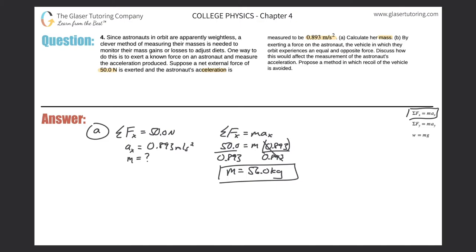Now for part B, let's see. It says, by exerting a force on the astronaut, the vehicle in which they orbit experiences an equal but opposite force. So discuss how this would affect the measurement of the astronaut's. Okay, so basically, just pretend you're in a space vehicle. That's an interesting space vehicle. I guess it'll have wings. Sure.